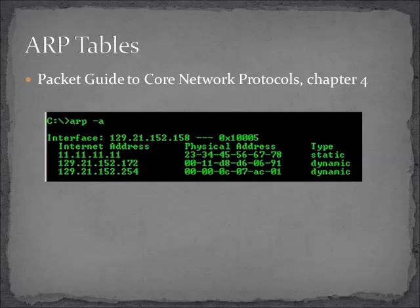One of the simplest protocols that we have out there is ARP. The address resolution protocol gives us a mapping between IP addresses and MAC addresses. Usually what happens is I have this IP address and I want to know where this MAC address is. It's important to remember that any device that has an IPv4 address and is connected to the network has an ARP table — routers have ARP tables, and APs and switches that have IP addresses also have ARP tables. For more on how ARP works, see Packet Guide to Core Network Protocols, Chapter 4.